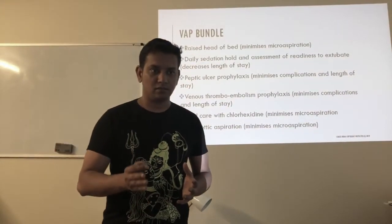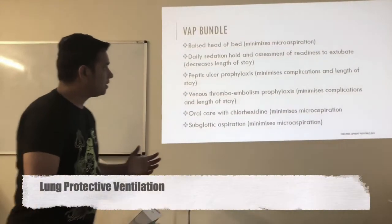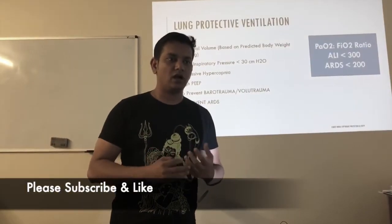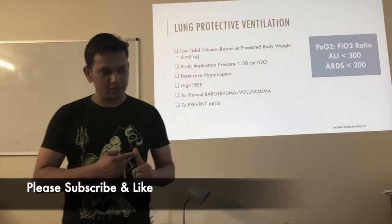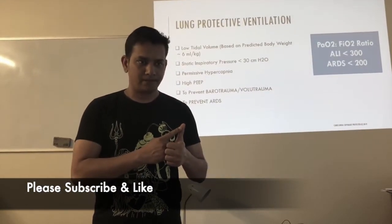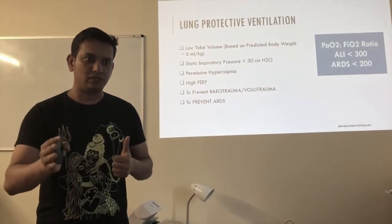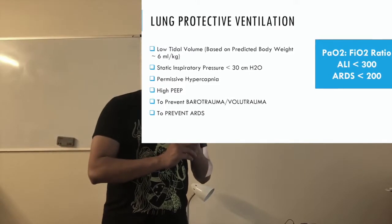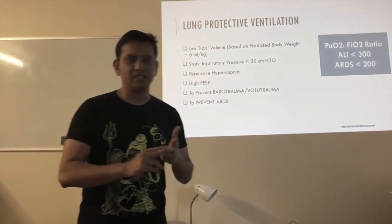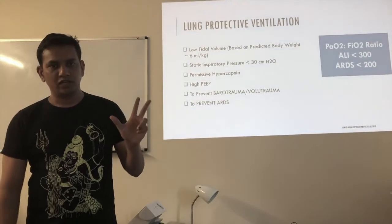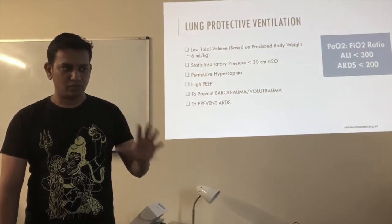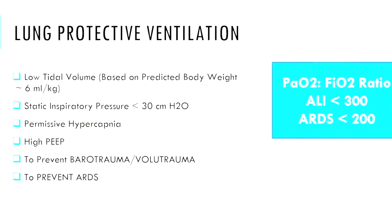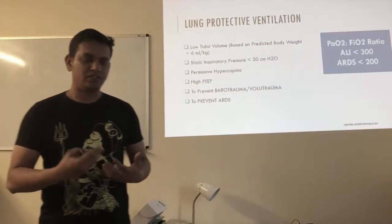We'll start with lung protective ventilation. Questions here could be framed as: what do you mean by lung protective ventilation and what are you aiming to achieve? Lung protective ventilation involves low tidal volume — based on the predicted body weight, not the actual body weight — around 6 ml per kg. Second is high PEEP. Third, permissive hypercapnia. Together, these will reduce or prevent barotrauma and volutrauma.